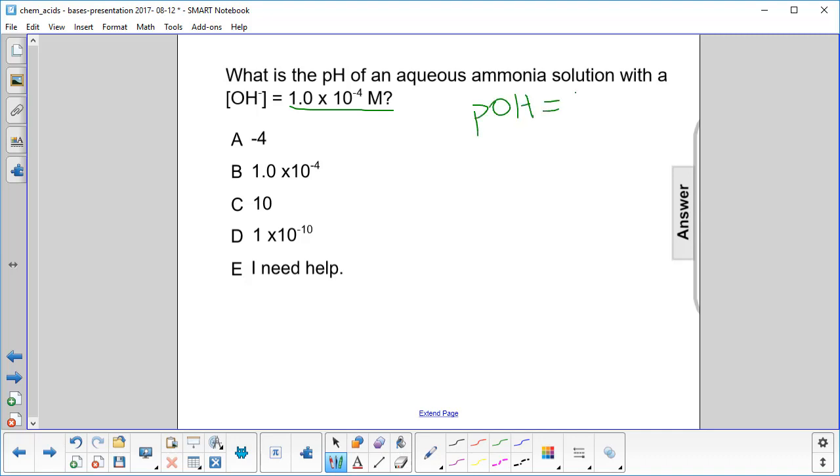I'm sorry, I guess I am writing some things, but I want to keep track. Now to find the pH, you just subtract that number from 14. So 14 minus four, 10.